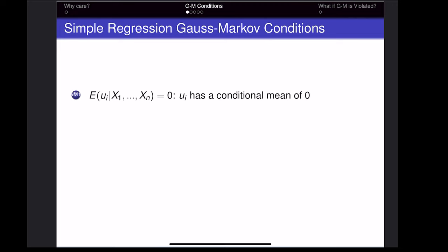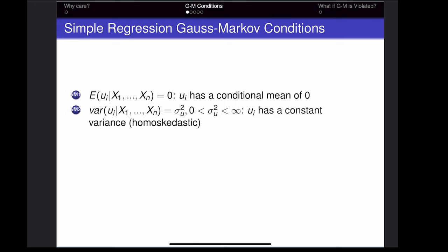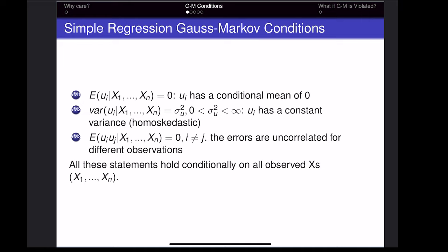The Gauss-Markov conditions state that: first, the expected value of the error term is zero once you condition on the value of x; second, the variance of the error term is constant — that's the homoscedasticity assumption; and finally, the errors are not correlated across different observations.